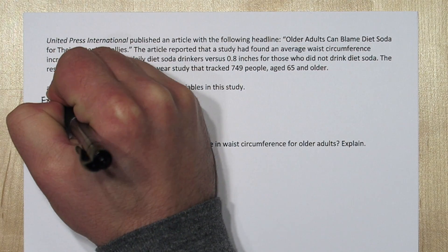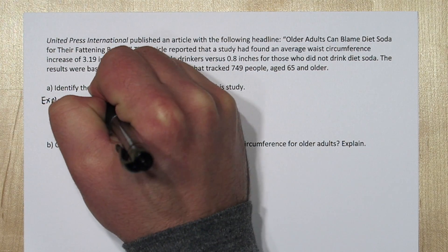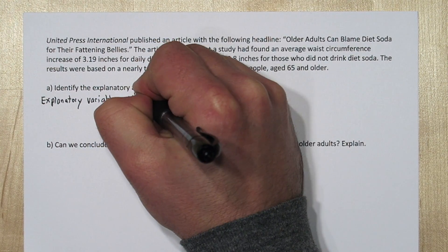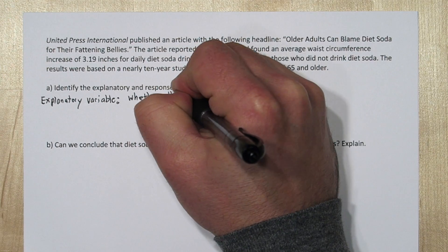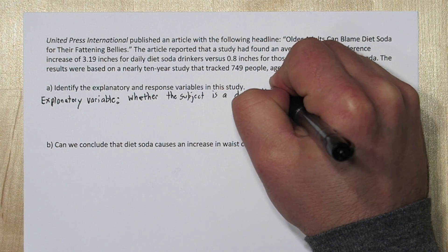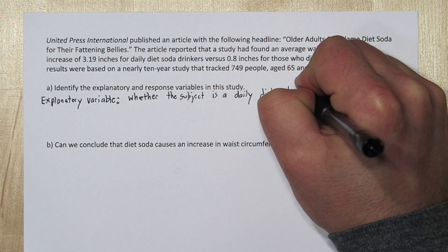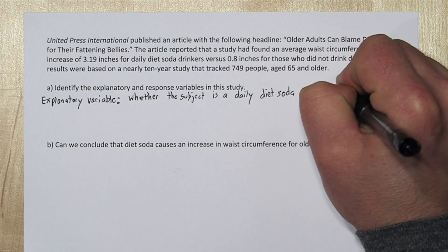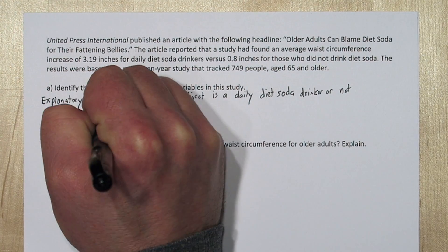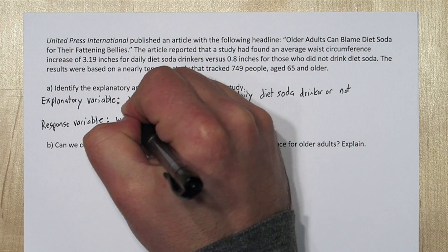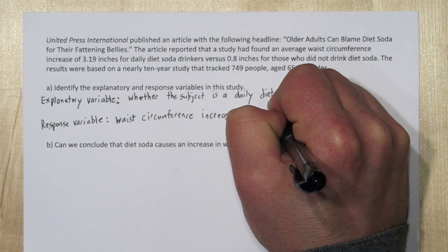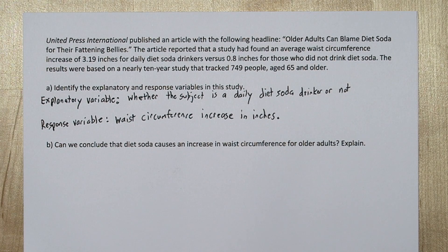The explanatory variable is what we're trying to use to explain what's happening to the response variable. So in this case, it's whether the subject is a daily diet soda drinker or not. Our response variable is waist circumference increase in inches over the 10 years of the study.